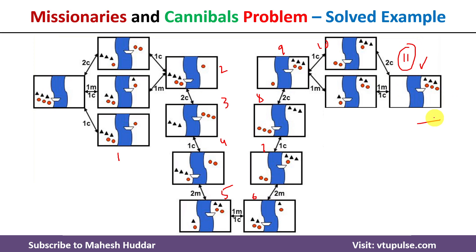In this video I have discussed what the missionaries and cannibals problem is in artificial intelligence and how to solve it with the minimum number of moves. I hope the concept is clear. If you like the video, please like and share with your friends, press the subscribe button for more videos, and press the bell icon for regular updates. Thank you for watching.